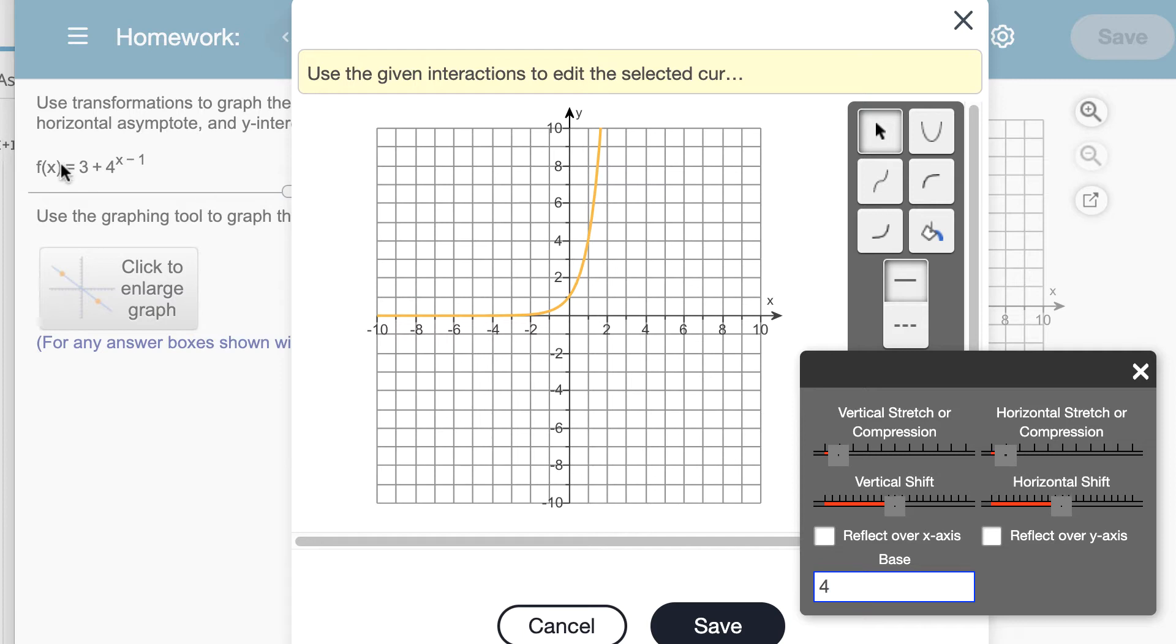We said we had a vertical shift up three units. So down here in the vertical shift bar, I'm going to move that up three units. And then we said we had a horizontal shift to the right one unit. So I'm going to do my horizontal shift to the right one unit.